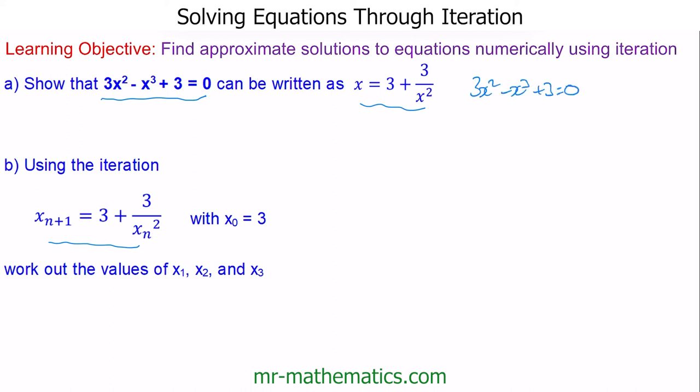These will cancel, so we'll have 3 minus x (since x³/x² = x) plus 3/x² equals 0.